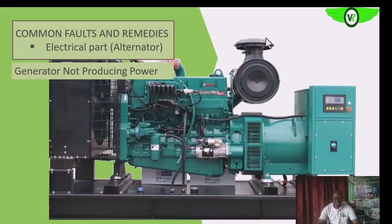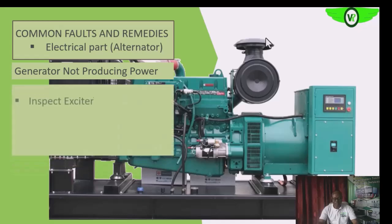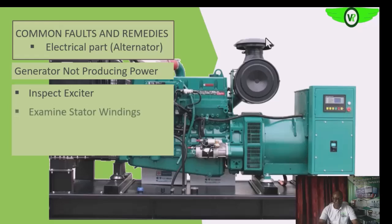When the generator is not producing enough power, a possible cause is that the exciter has failed. If any part of the excitation system has failed, power will not be delivered to the main field, and that will affect the generator entirely — it will not produce.